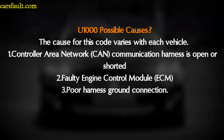There are dedicated modules for most parts of the vehicle — for example, the Engine Control Module (ECM), Transmission Control Module (TCM), and Brake Control Module (BCM). The possible causes for this code vary with each vehicle. The first cause is a Controller Area Network communication harness that is open or shorted. The second cause is the Engine Control Module fault, and the third is a poor harness ground connection.